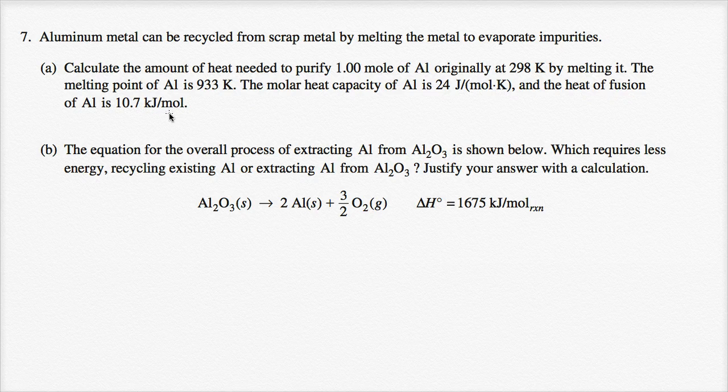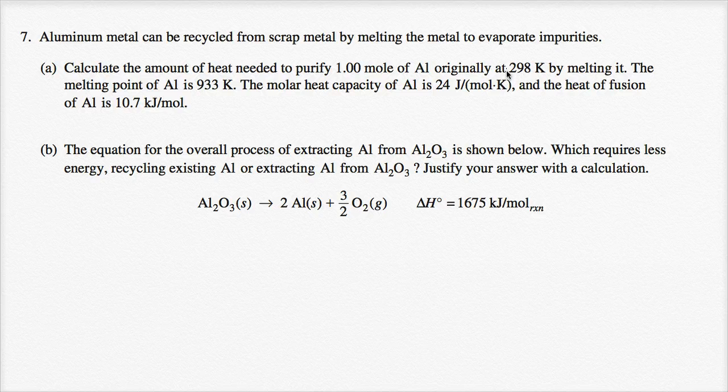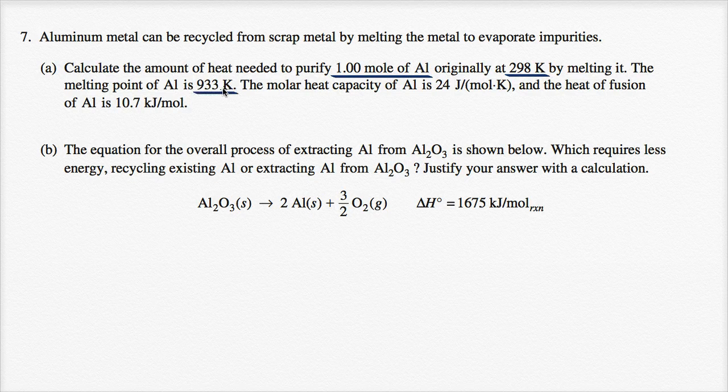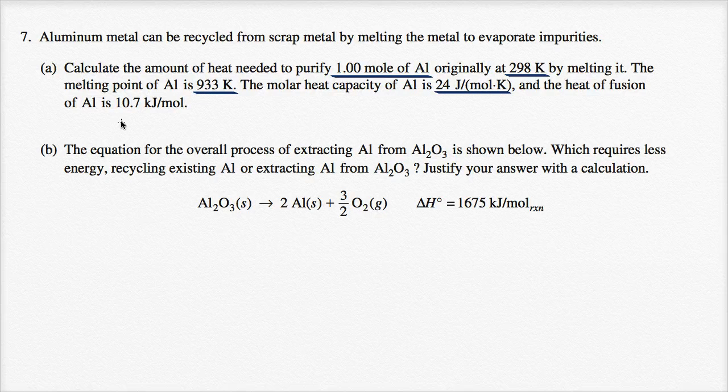So we need to think about the heat needed to raise the temperature of this one mole of aluminum from 298 Kelvin to 933 Kelvin. We're gonna do that by looking at the molar heat capacity, and then we need to add to that the heat of fusion, the heat necessary to actually melt it. Let's do that in steps.